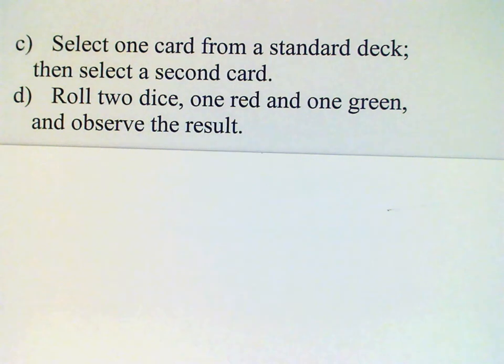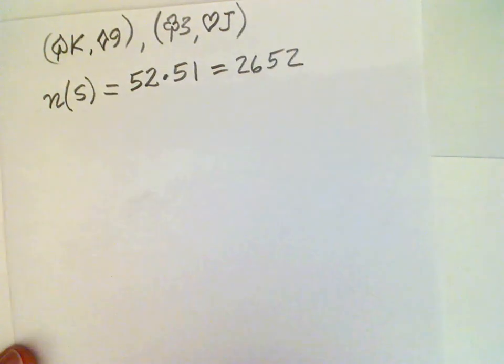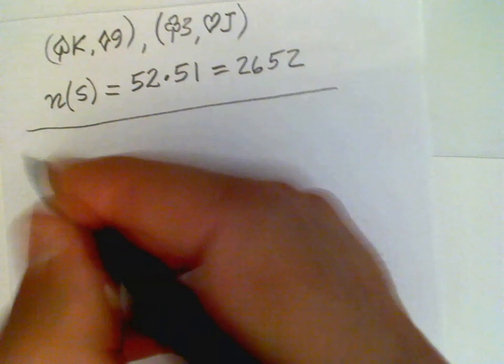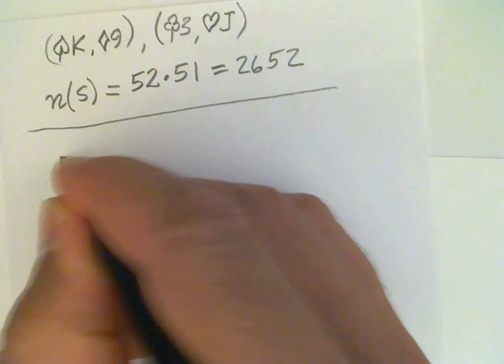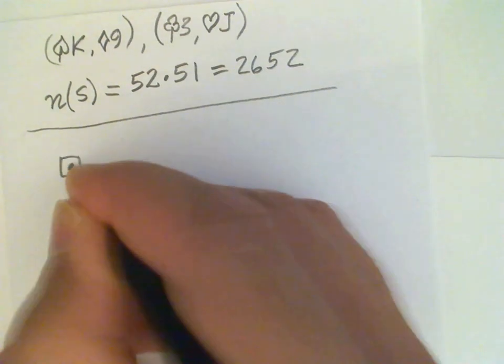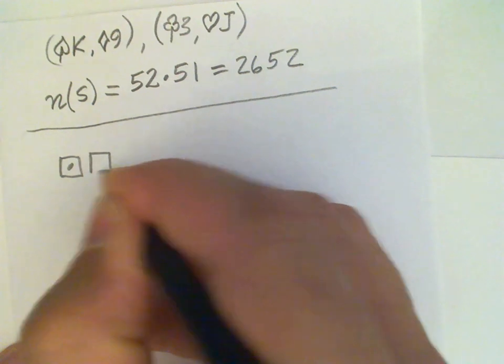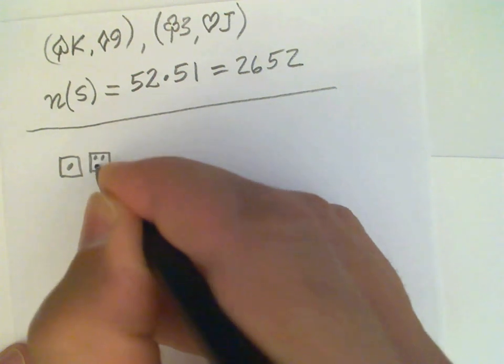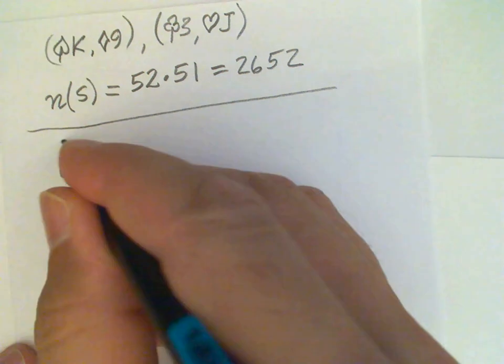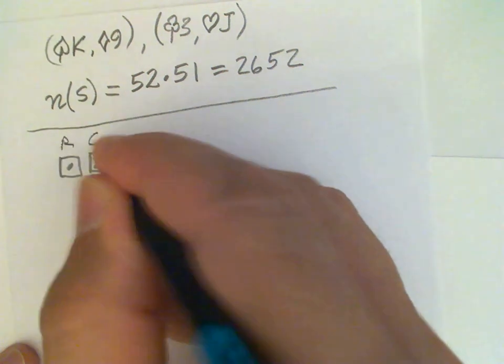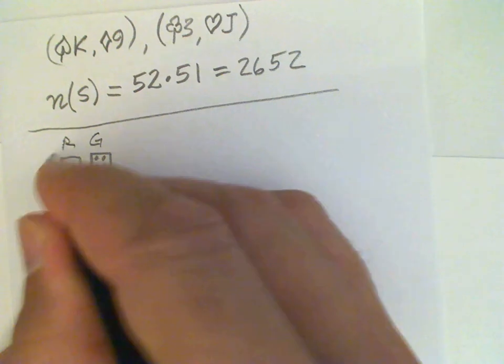One other type of experiment: we want to roll two dice this time. One is going to be a red die and the other is a green die, and we'll observe the result. So again, we can write down a few sample outcomes. We could have a one and a four—let's say this is the red die and this is the green die, one and a four.